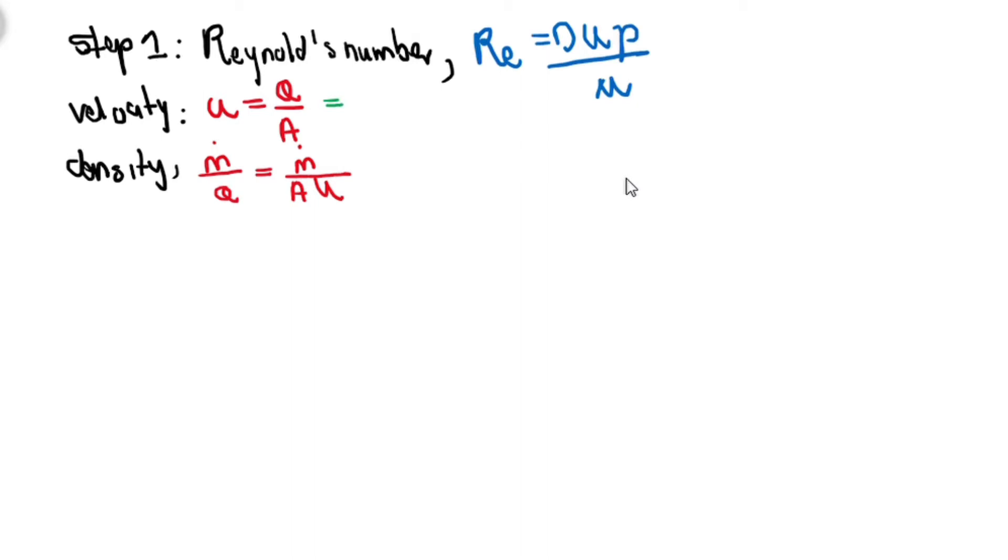We can also express velocity in terms of mass flow rate. Mass flow rate is in units kg per second. It's basically mass flow rate over density and area. Now that we've expressed this, we can go back to our Reynolds equation.